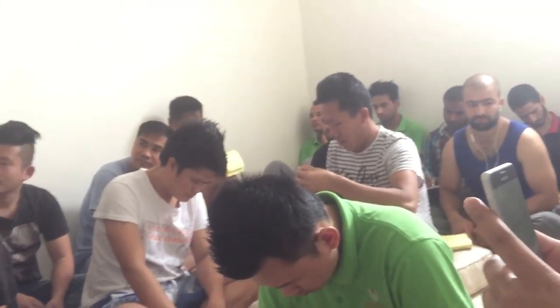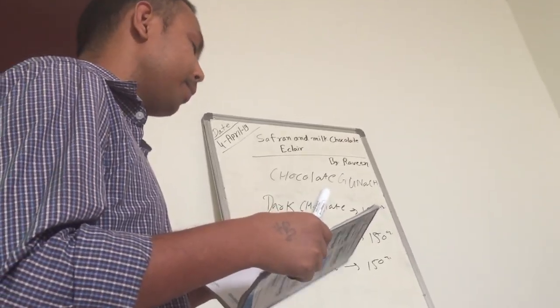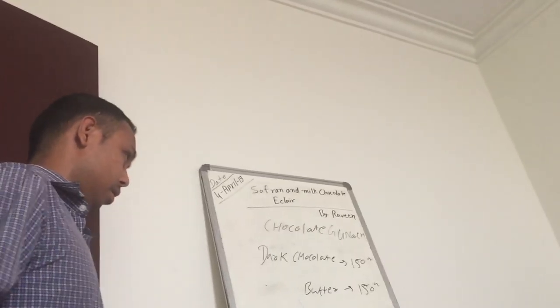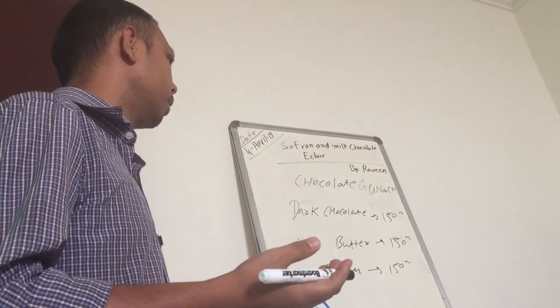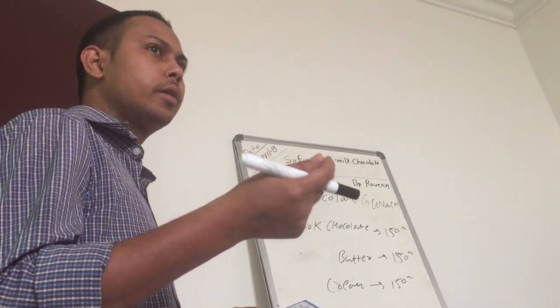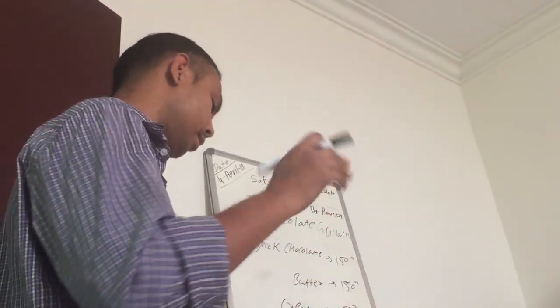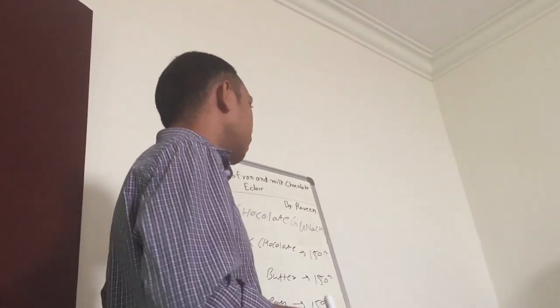How do you melt the chocolate? Take a pan, then slow flame, put on the fire and melt with slow flame. No, not like that.